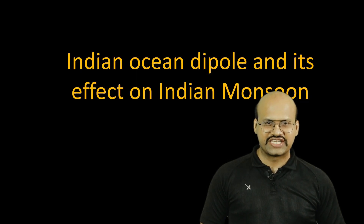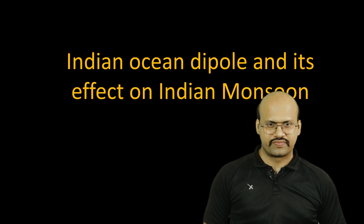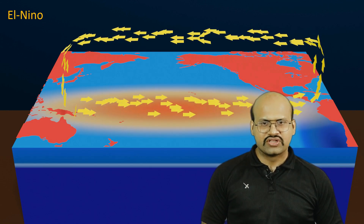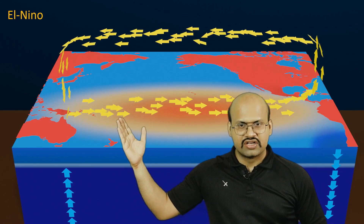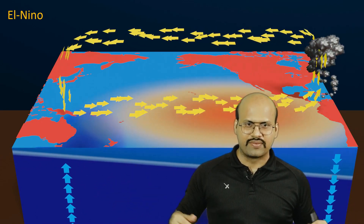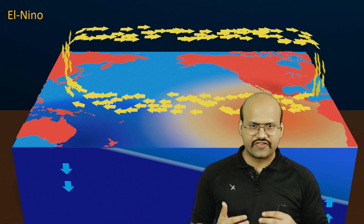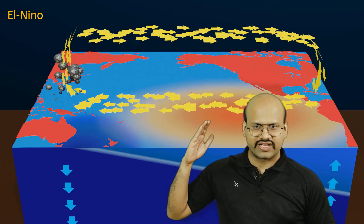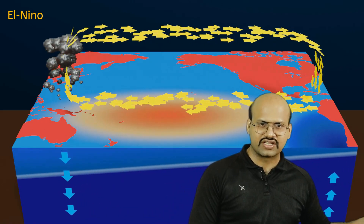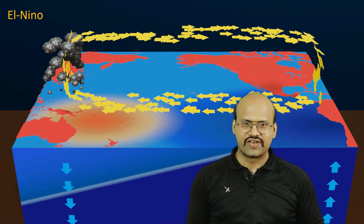Hello friends, welcome to another video of Zeta Axis. Today we will discuss about Indian Ocean Dipole and its effect on Indian monsoon. In our previous videos we discussed about El Niño — how the surface winds change direction, how warm waters are taken towards the South American region during El Niño phase, and how there is a change in thermocline and rainfall shifts to South America.